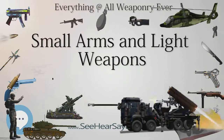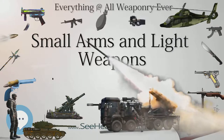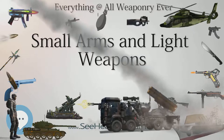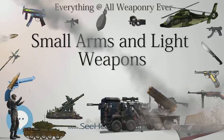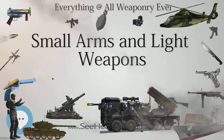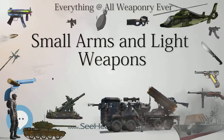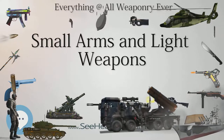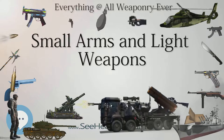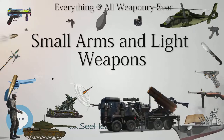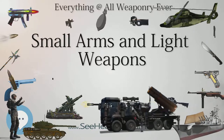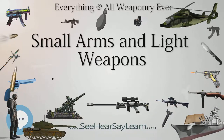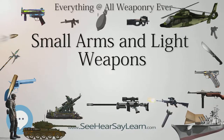Small arms are, broadly speaking, weapons designed for individual use. They include, inter alia, revolvers and self-loading pistols, rifles and carbines, submachine guns, assault rifles and light machine guns. Light weapons are, broadly speaking, weapons designed for use by two or three persons serving as a crew, although some may be carried and used by a single person.